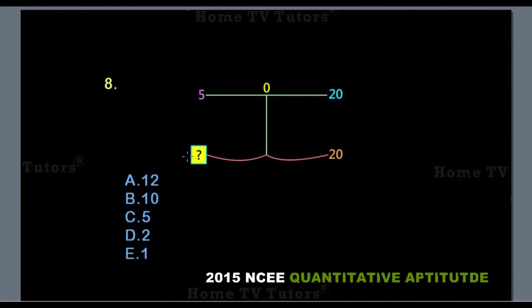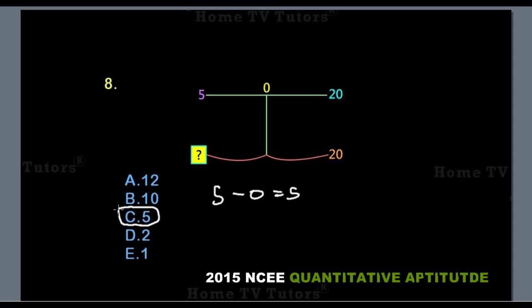Now we are to find the unknown number. Remember, in the previous sample, this number minus this number is what swings down to give us this number. So 5 minus 0 gives us 5. This minus this swings down to give us the missing number 5. The answer option C is the right answer.